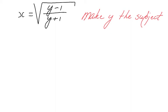Well that student already correctly said the first step is to square both sides. To get rid of that square root sign, we are going to get x squared equals y minus 1 over y plus 1.